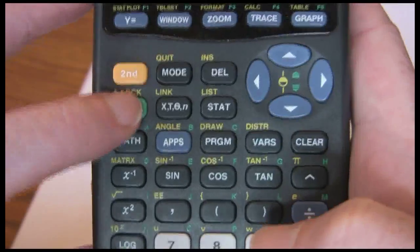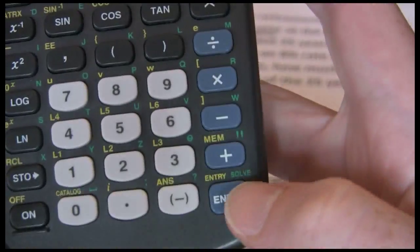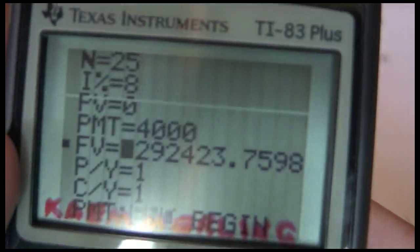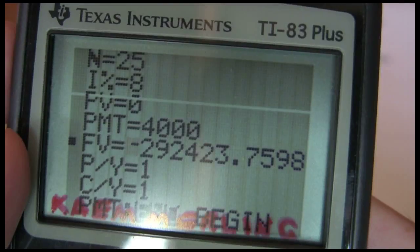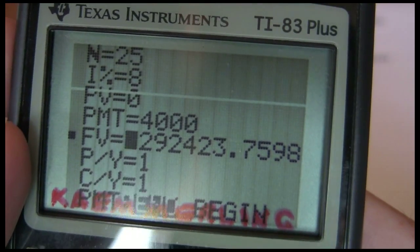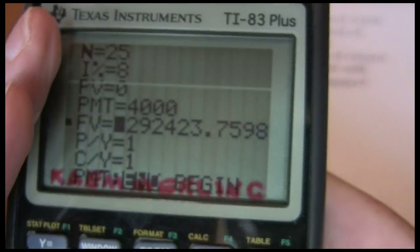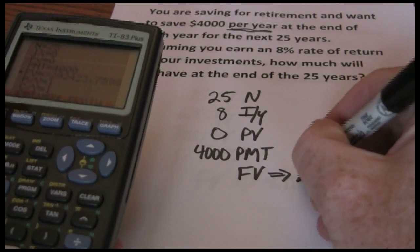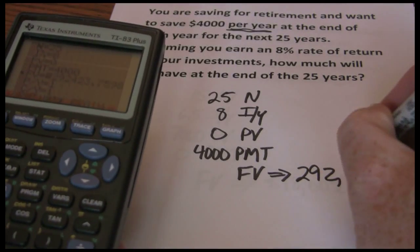So again, green shift. Solve. And at retirement, I'm going to have $292,423.76.